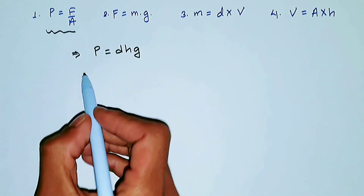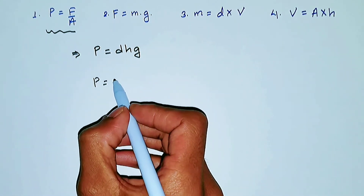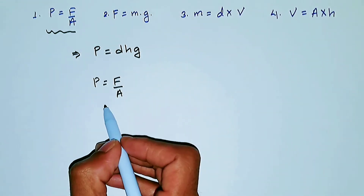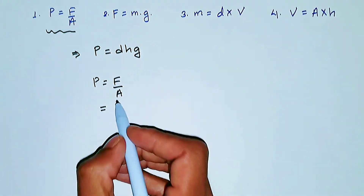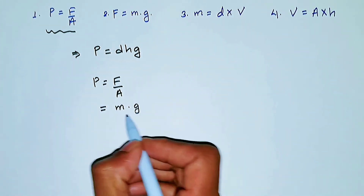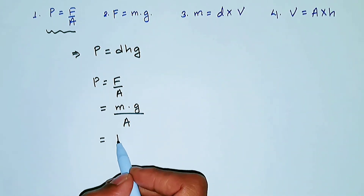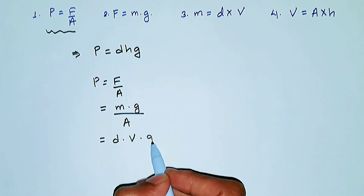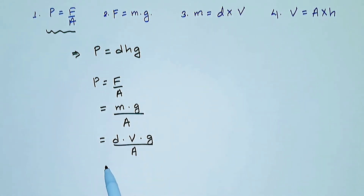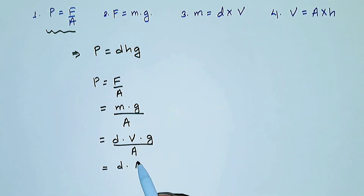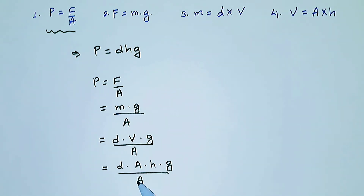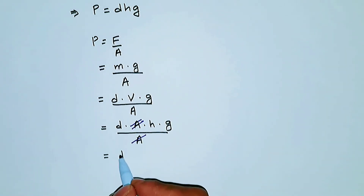To derive this formula, we start from pressure equals force divided by area. We replace force with mass times acceleration due to gravity, giving us Mg divided by area. Then we replace mass with density times volume, giving density times volume times G divided by area. Next, we replace volume with area times height, so it becomes density times area times height times G divided by area. Finally, we cancel the two area terms, and we get D times H times G.